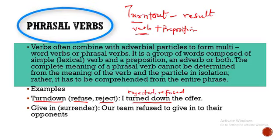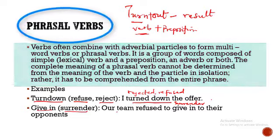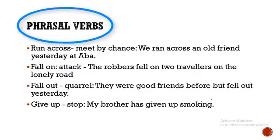Then we have 'give in.' 'Give in' means to surrender. So we can say 'Our team refused to give in to their opponents,' or we can say 'Our team refused to surrender.' Each word in brackets can be used to replace the phrasal verb. Then we have 'run across.'